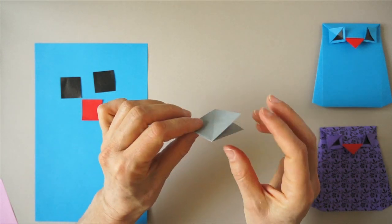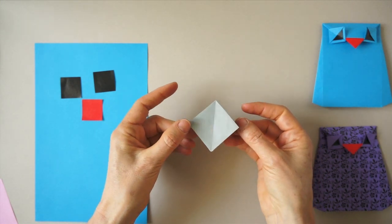So that we collapse it into what is called a preliminary base. We need to have two flaps on this side and two flaps on this side. And this is the shape.